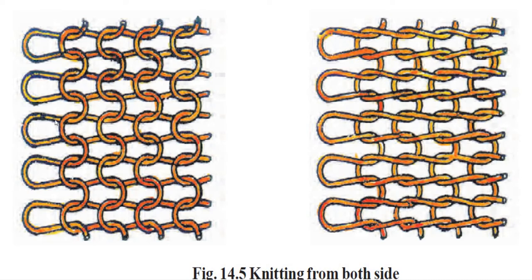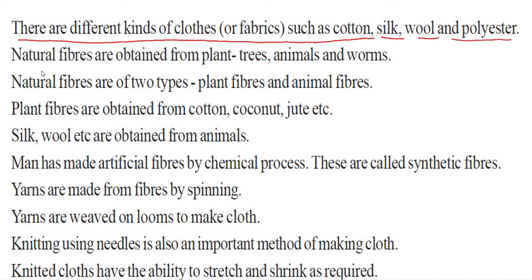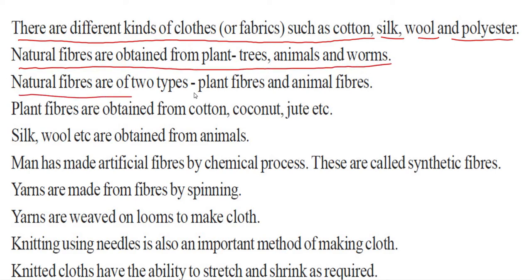There are different kinds of clothes or fabrics, such as cotton, silk, wool, and polyester. Natural fibers are obtained from plant trees, animals, and worms. Natural fibers are of two types: plant fibers and animal fibers.